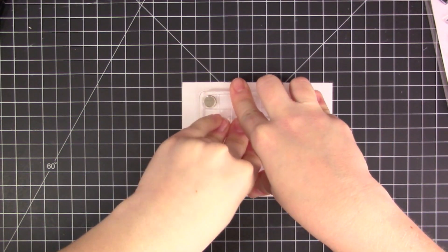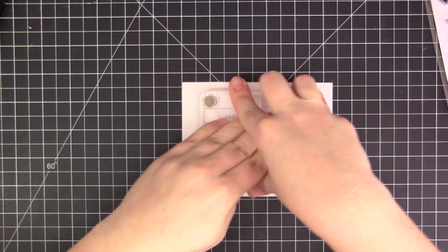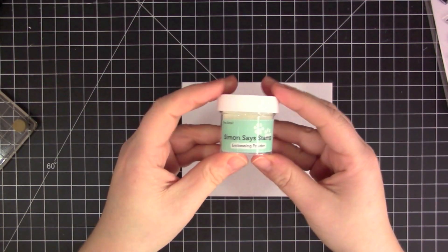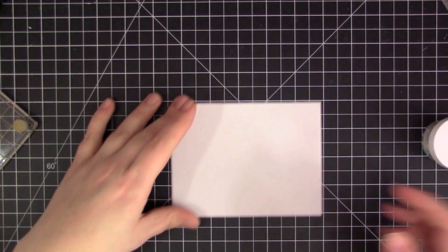You want to make sure you have a lot of ink on the stamp, and you also want to make sure you put a lot of pressure onto the stamp when you're pushing it onto the canvas. Because it's a textured material, you really want to make sure that the stamp and the ink go into the grooves of the canvas.